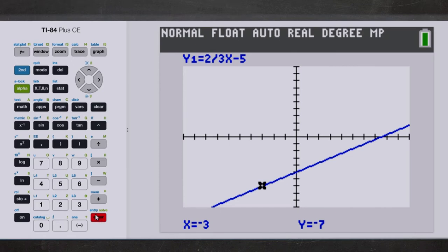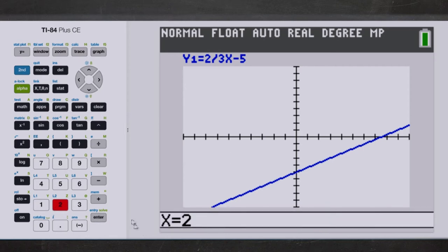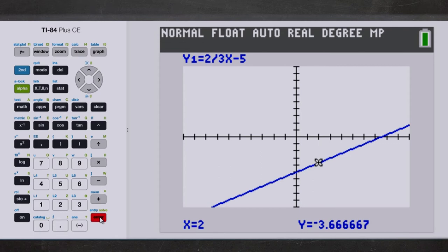You say, what are we going to do on this next one? We're going to put in 2. It's going to probably give us a decimal because that's what the calculator does so well. That is a negative 3 and 2 thirds, folks. And that is what we said it was supposed to be.